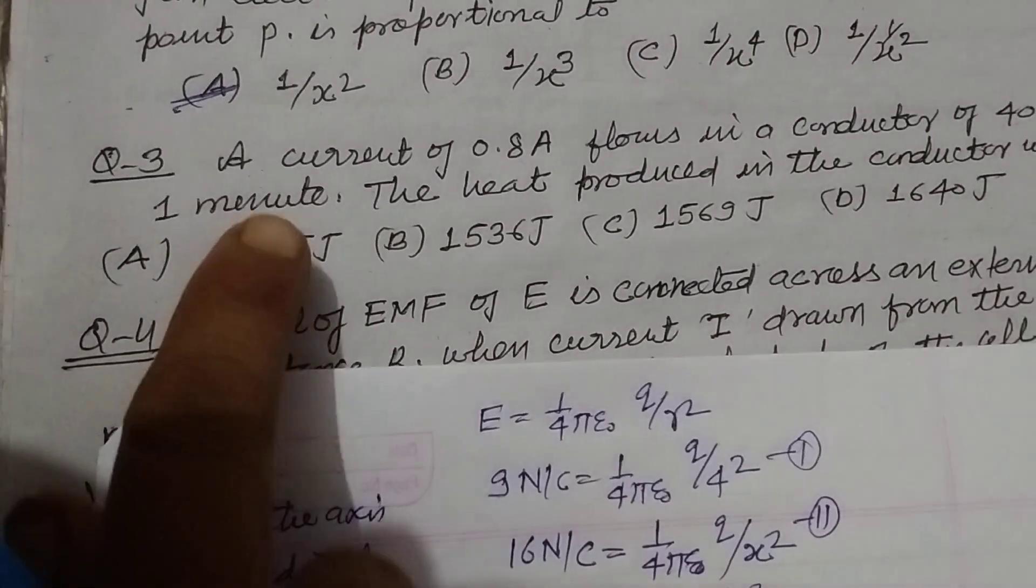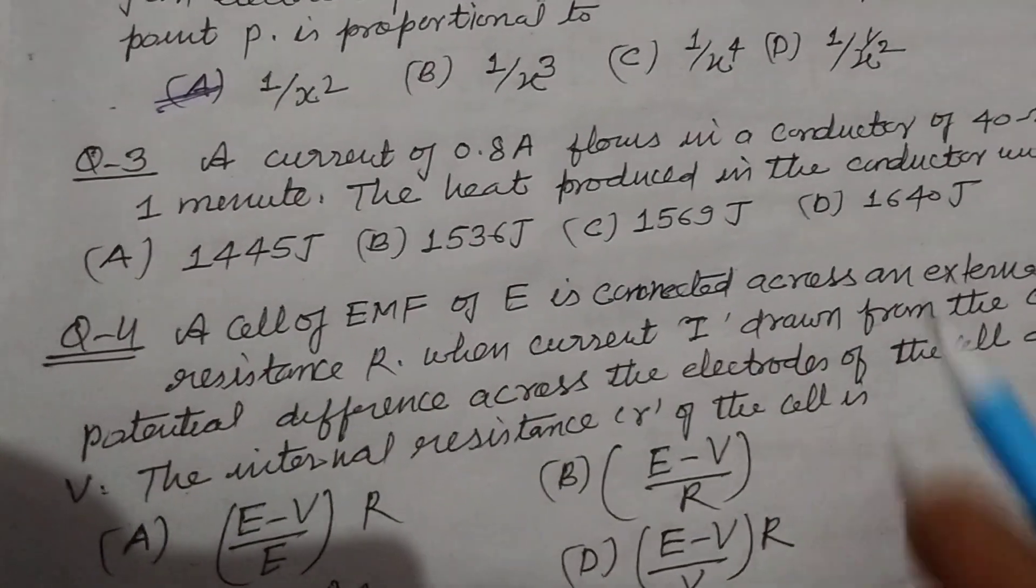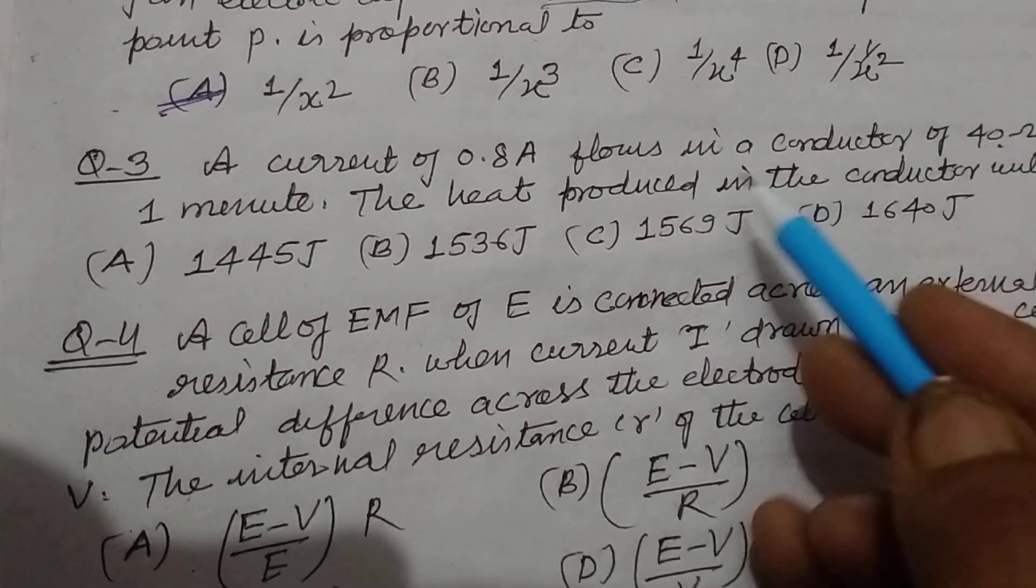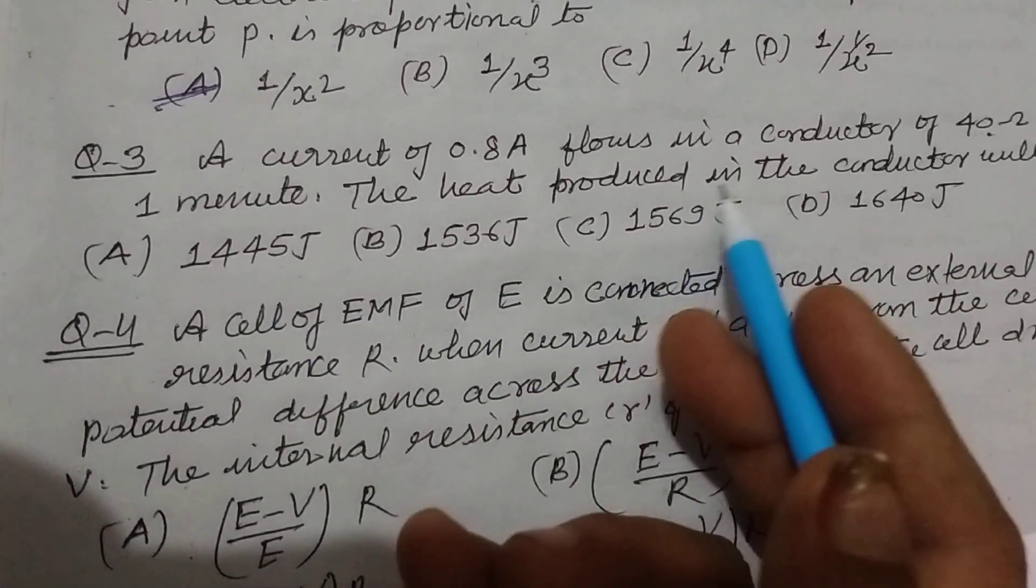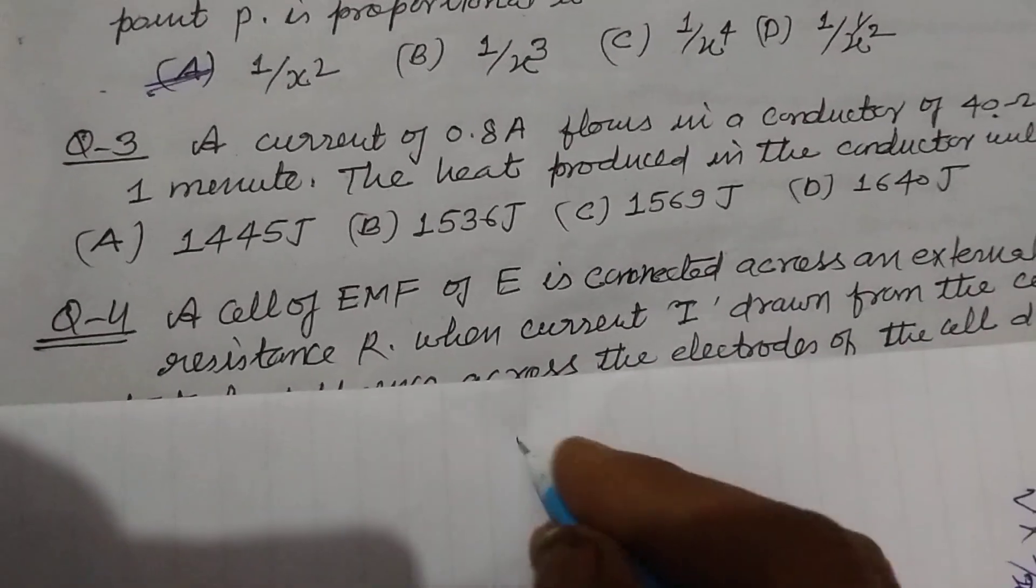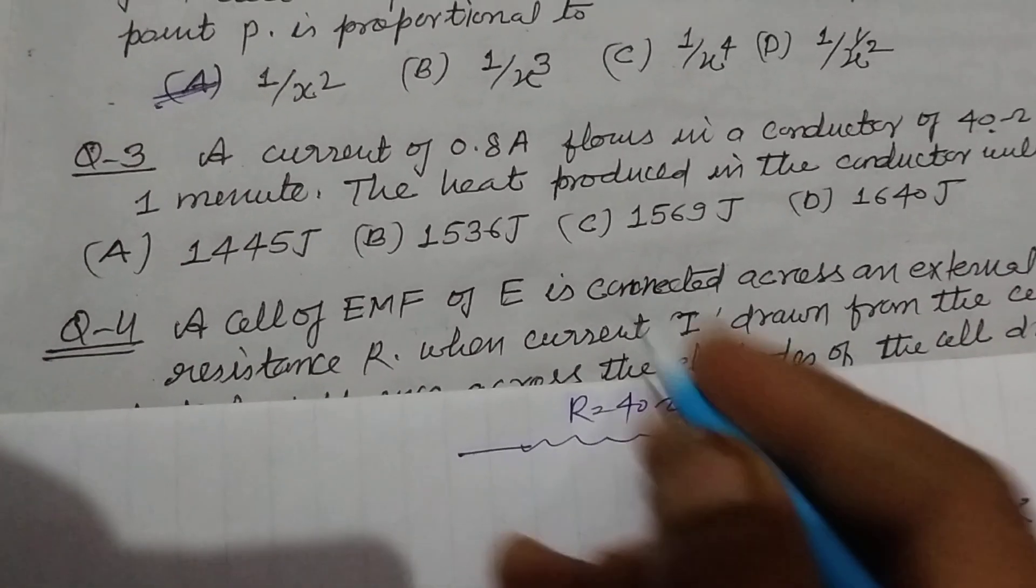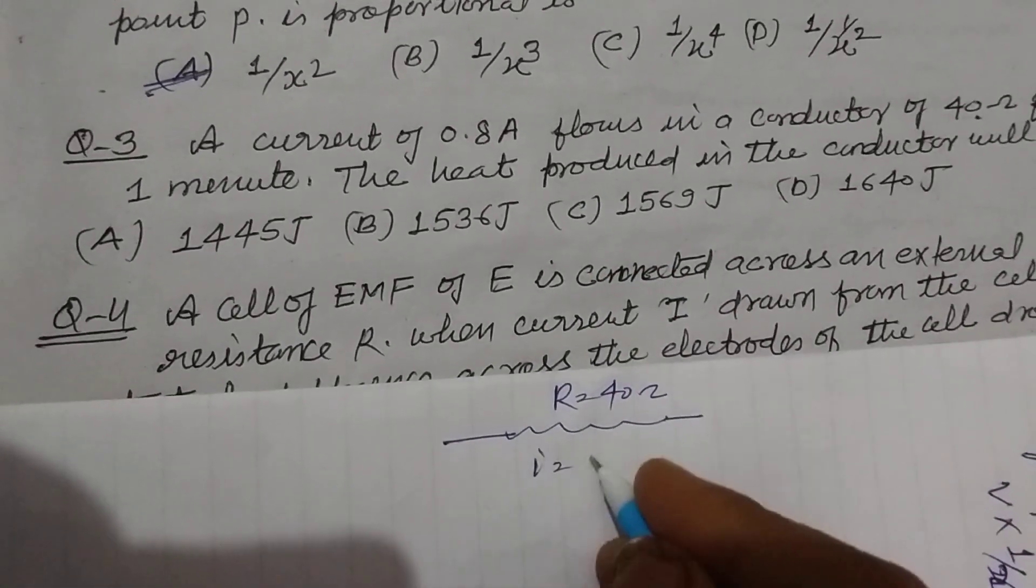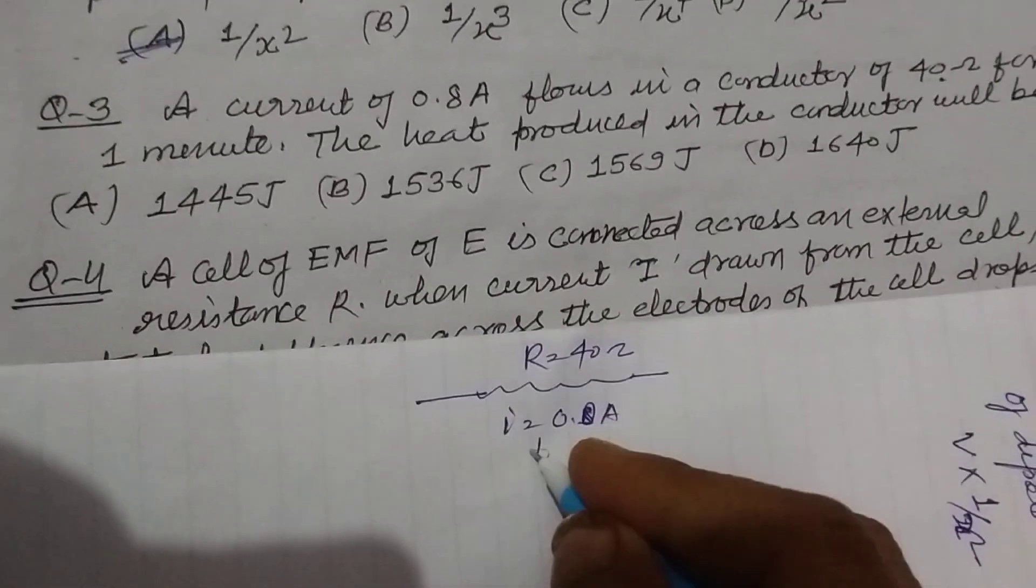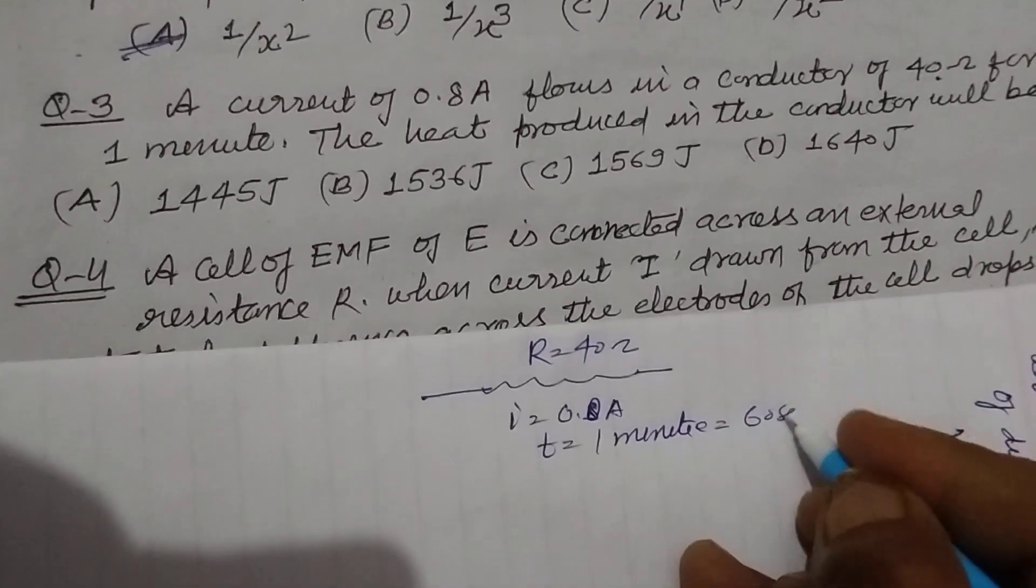The next question is: a current of 0.8 ampere flows in a conductor of 40 ohms for 1 minute. The heat produced in the conductor will be? So this is a conductor of resistance R equal to 40 ohms, and I is 0.8 amperes, and time is 1 minute, it means 60 seconds.